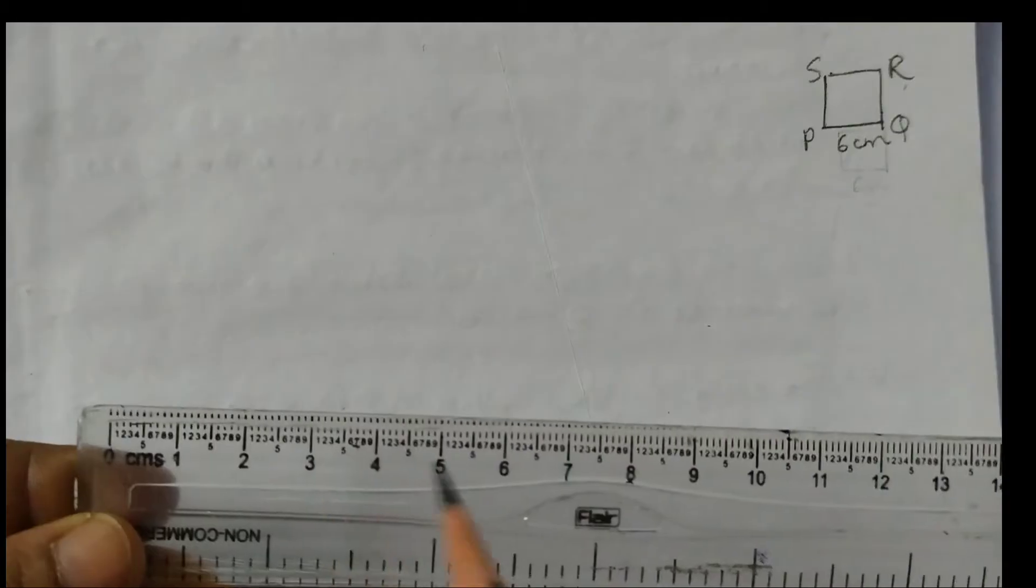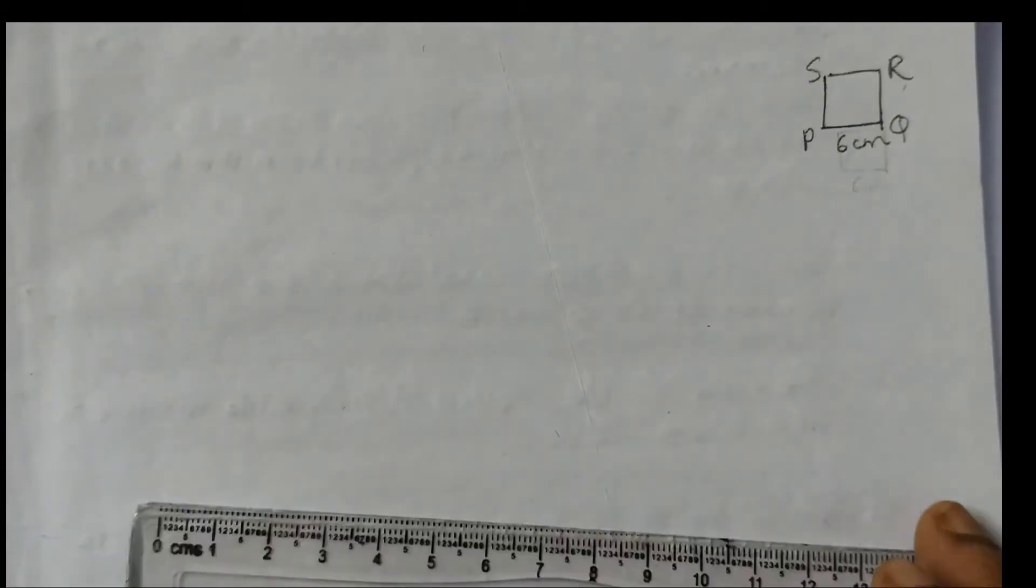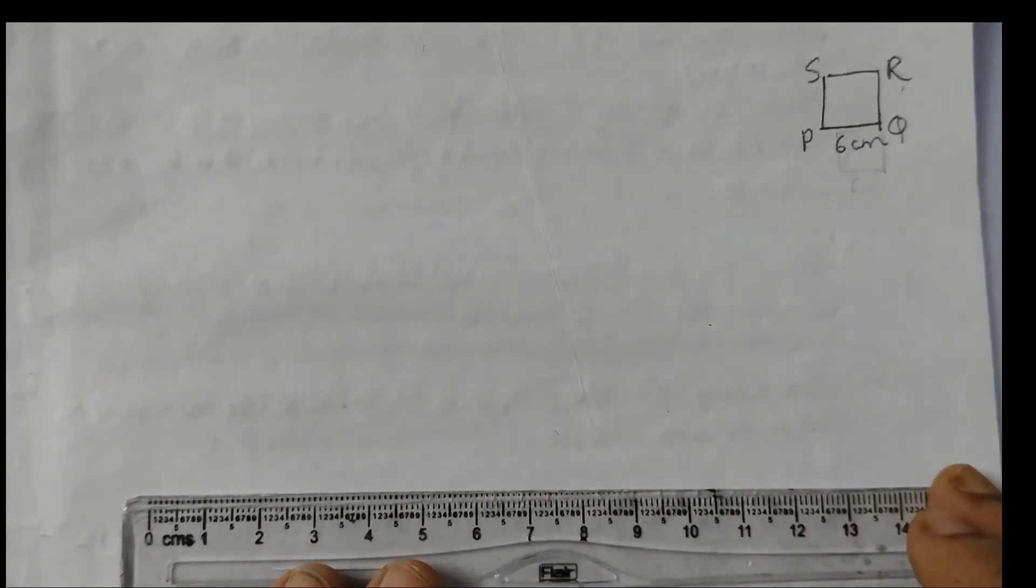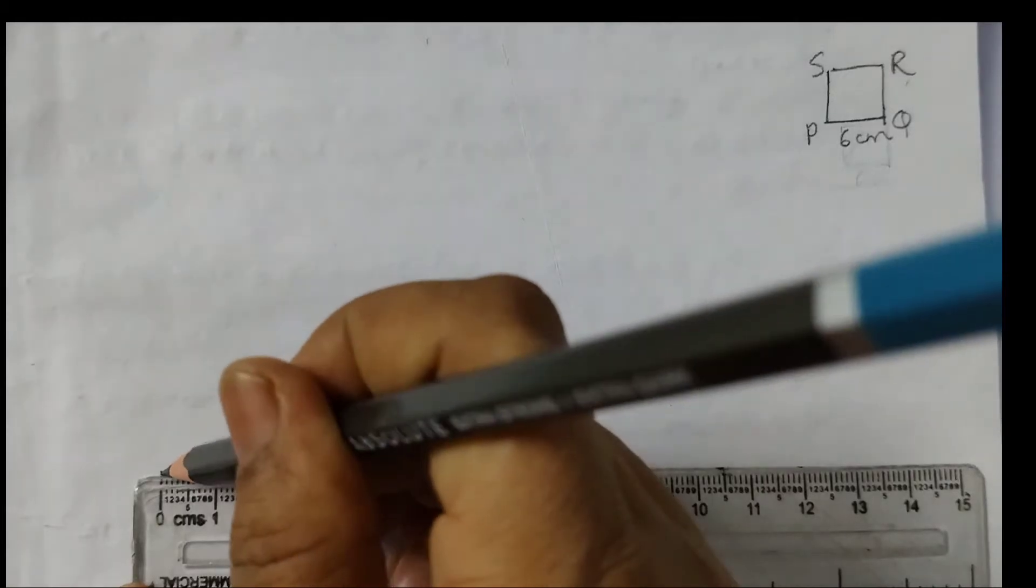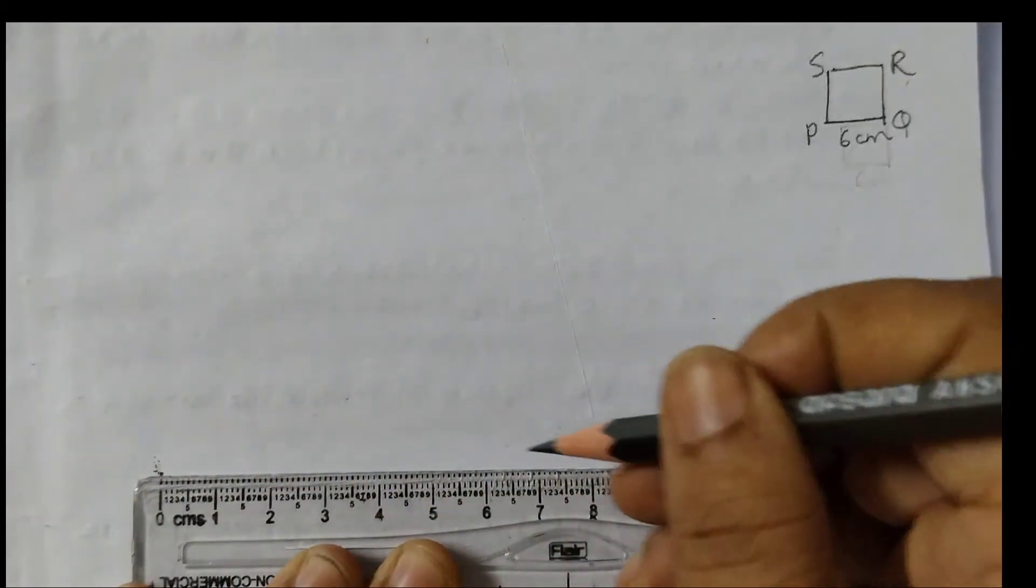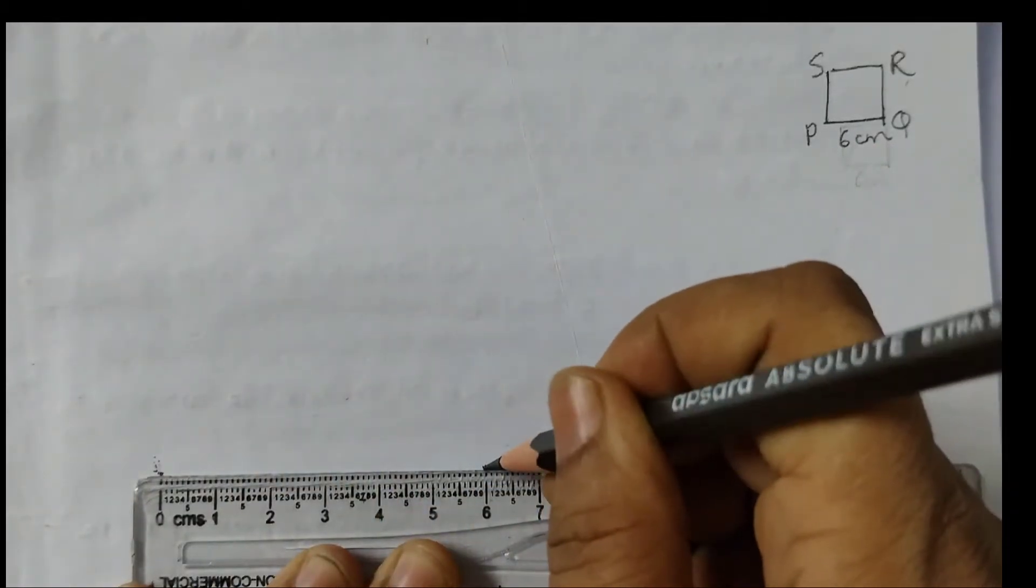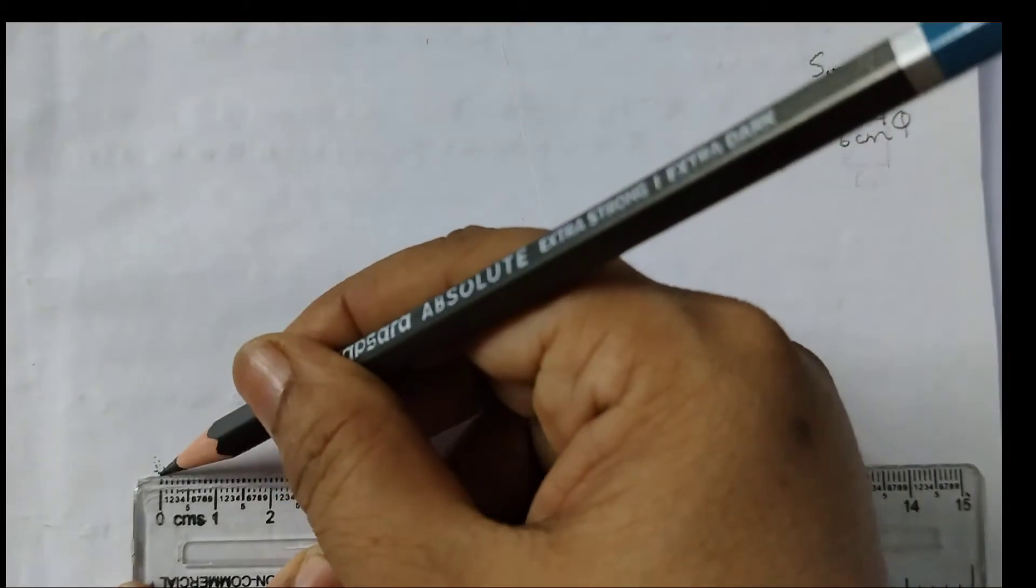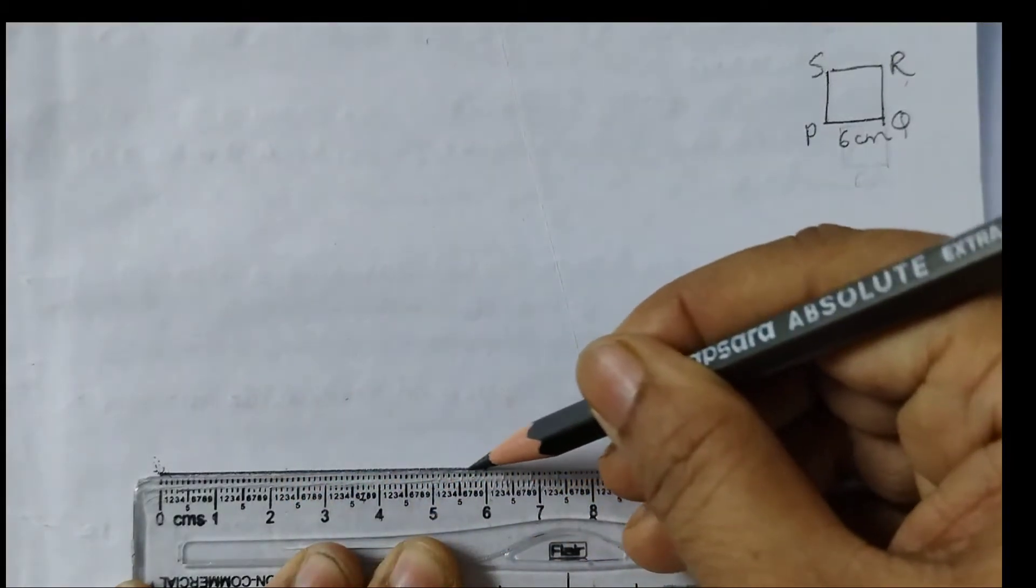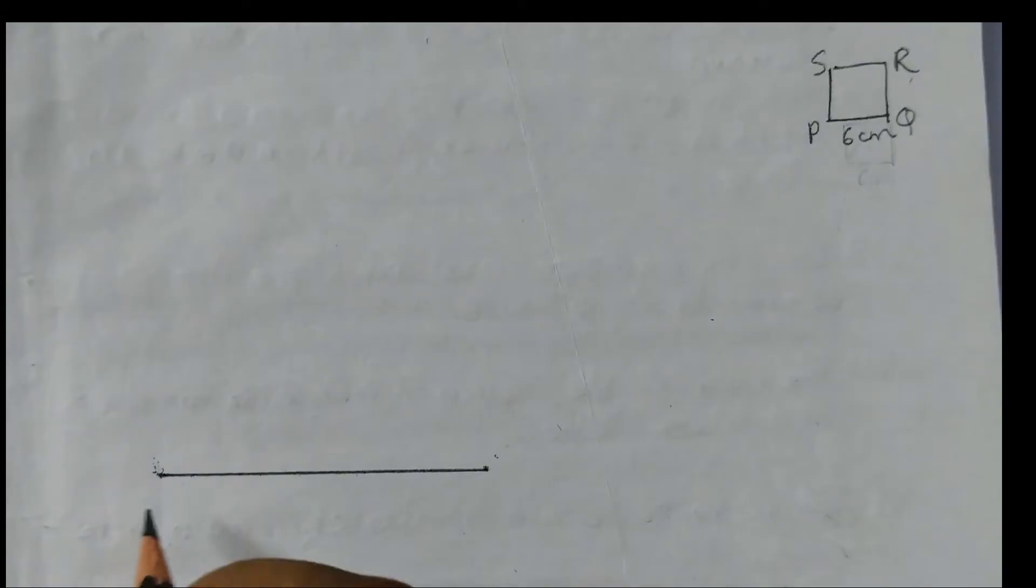Okay, first you take the ruler and take 6 cm. So we have 0 here and 6 here. So 6 cm line segment you are going to draw. Mark a point here at 0 and mark a point here at 6. Join the points. Label it as PQ and this is 6 cm. This is step 1.